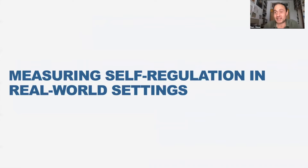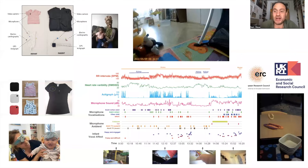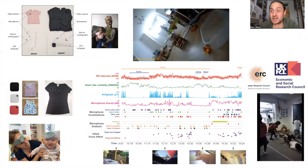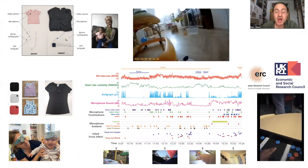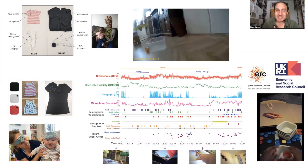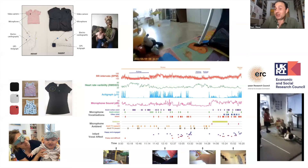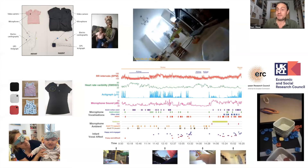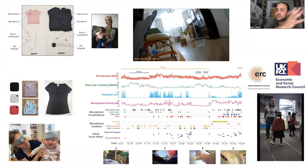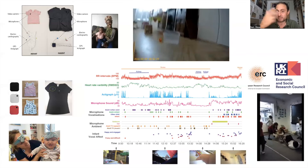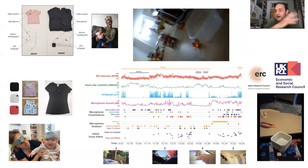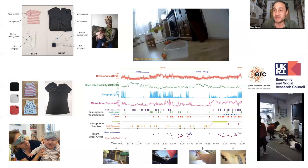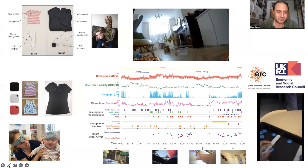So how can we measure self-regulation more like how it occurs in real-world settings? I've been doing a lot of work on this, funded by the Economic and Social Research Council UK and by the European Research Council. We're designing little monitors - a video camera, a microphone, a heart rate monitor, actigraphy for movement patterns, GPS, and parent-child proximity sensors. We put them on both the baby and the mum. A researcher goes to their home at the start of the day, puts the kit on both parent and child, and returns at the end of the day to collect it - giving us a random sample of a full day in their lives.